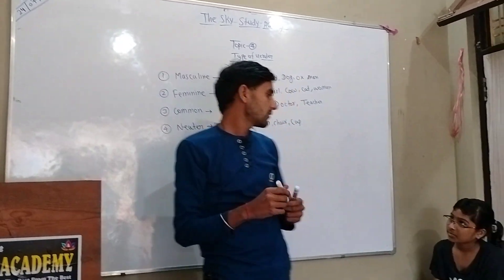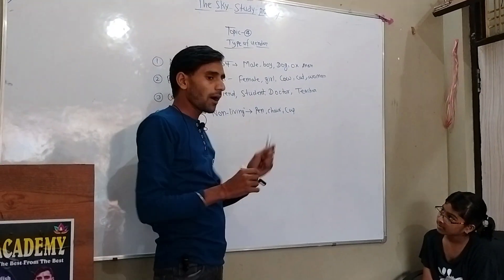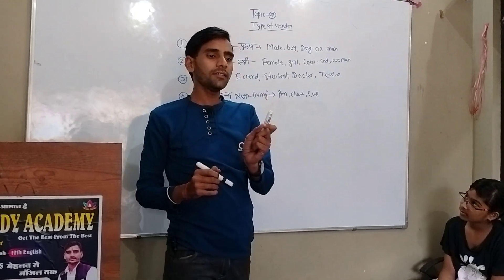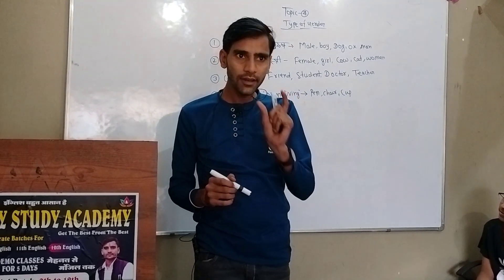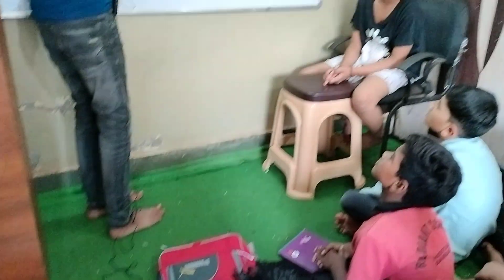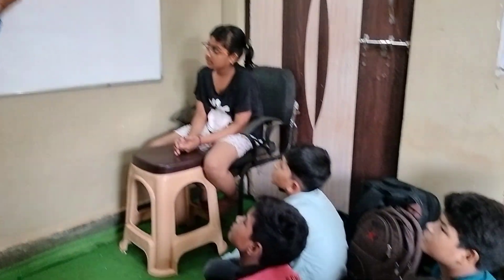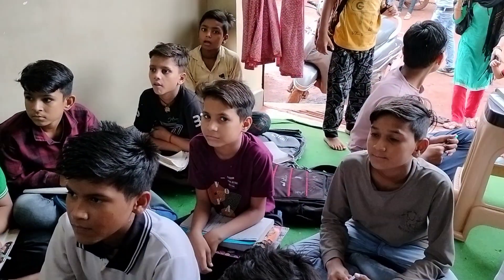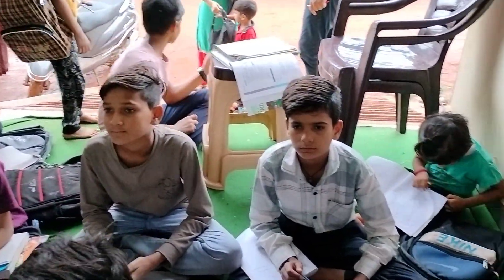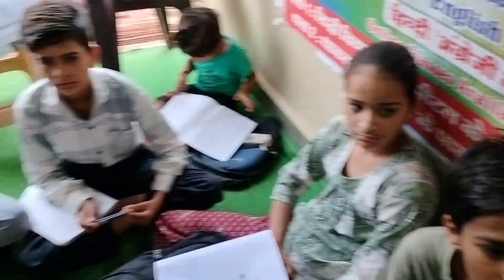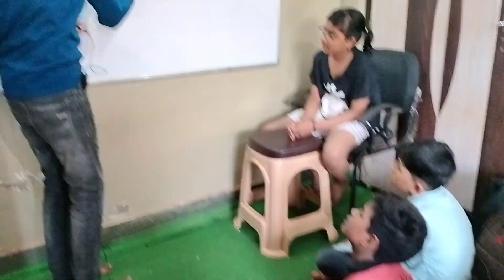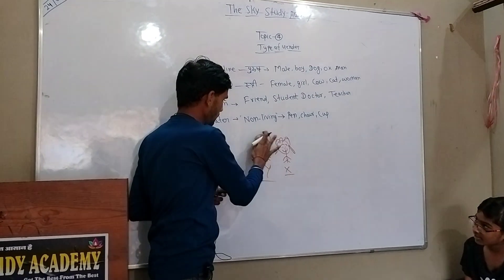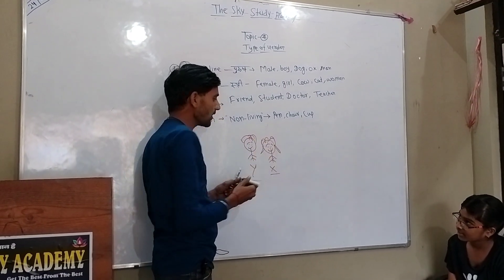In simple manner, we can say that to identify about a person is known as gender. For example, you have to identify who is a girl and who is a boy. This is Y and this is X — who is a girl in this picture, and who is a boy?